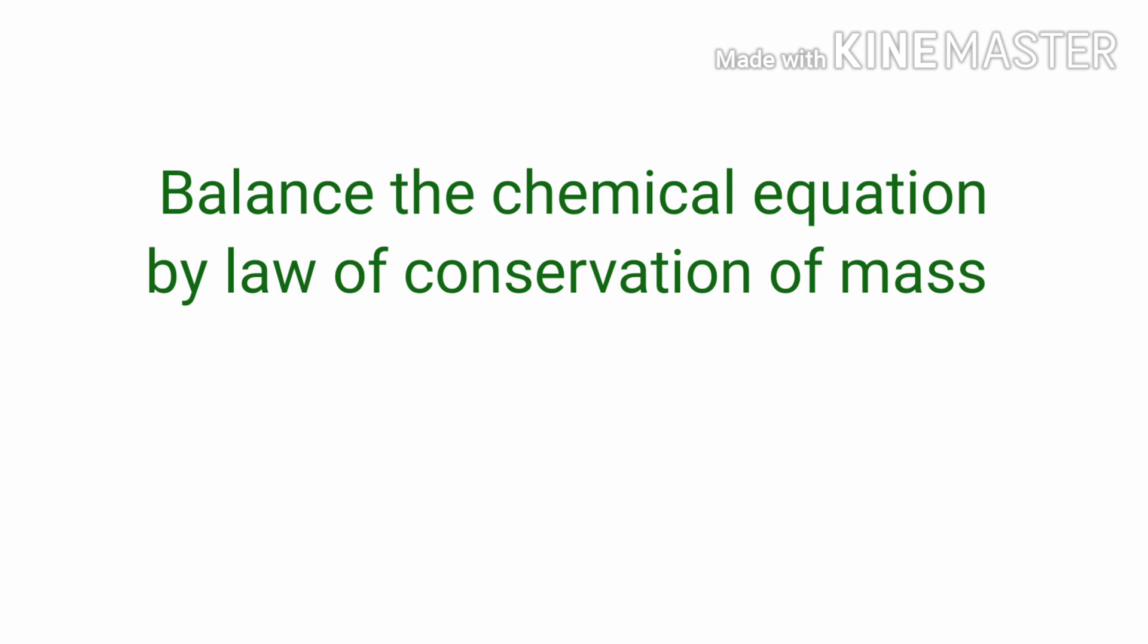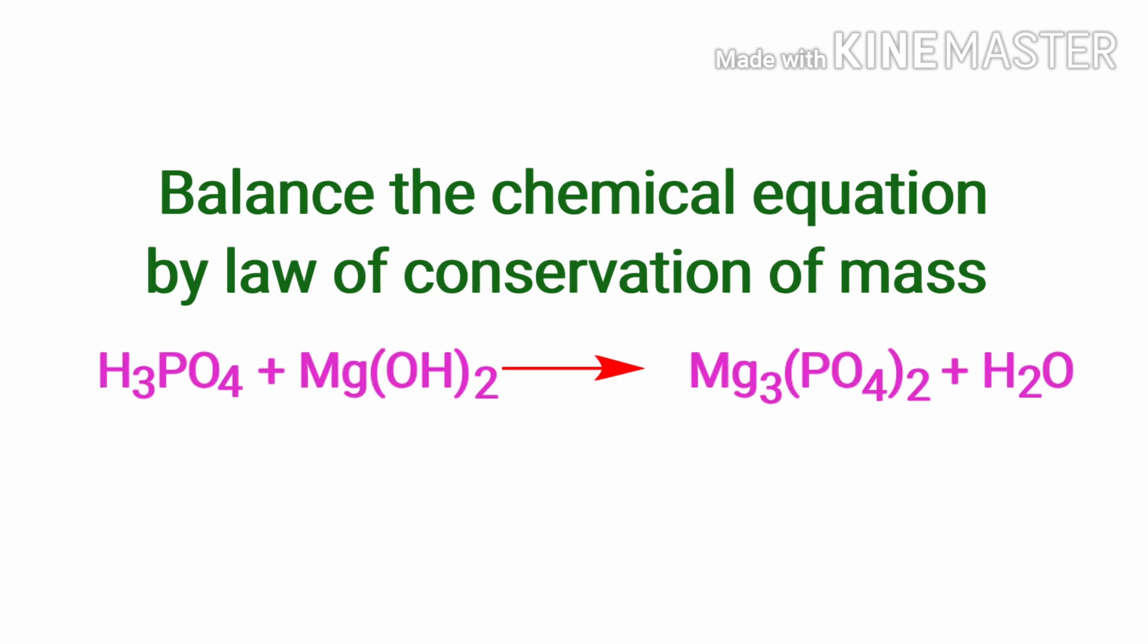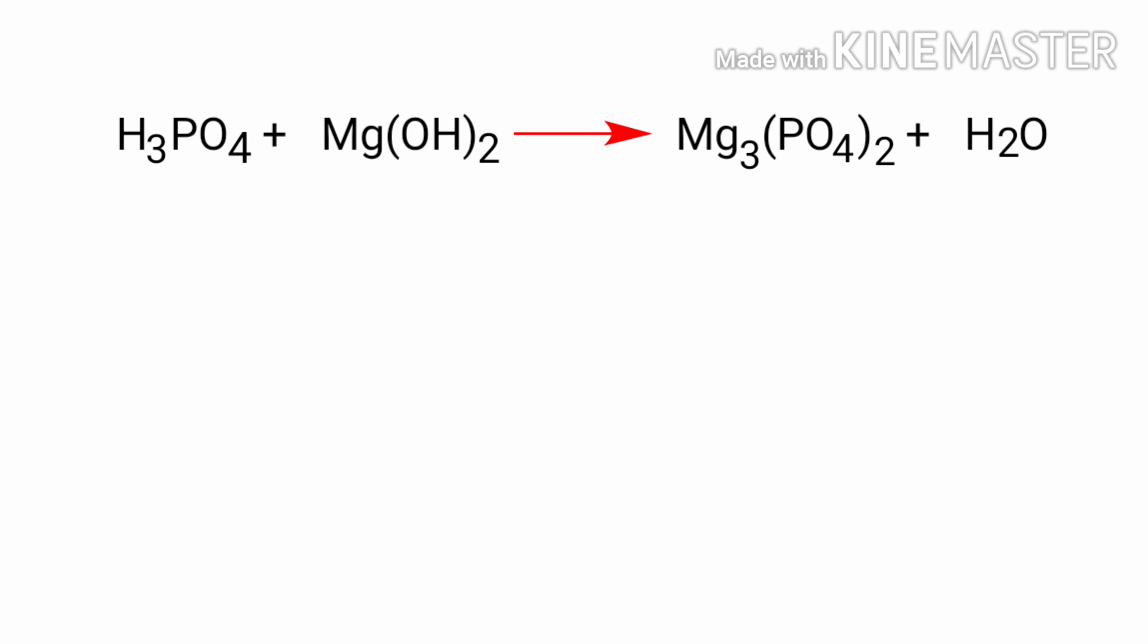Balance the chemical equation by law of conservation of mass. Phosphoric acid plus magnesium hydroxide gives us magnesium phosphate plus water. In this equation, the reactants are phosphoric acid and magnesium hydroxide, and the products are magnesium phosphate and water.